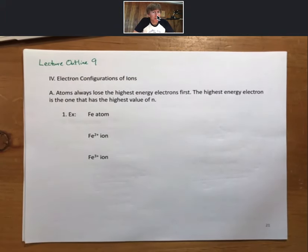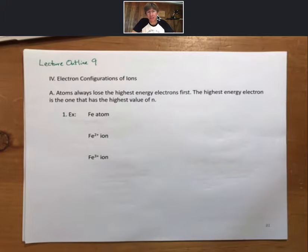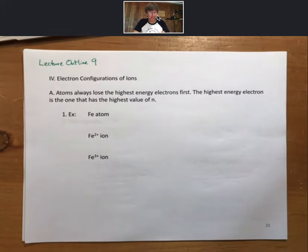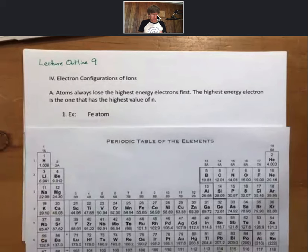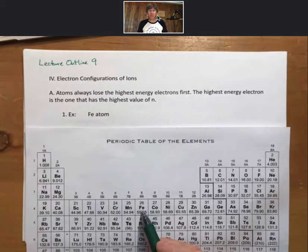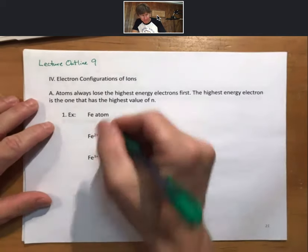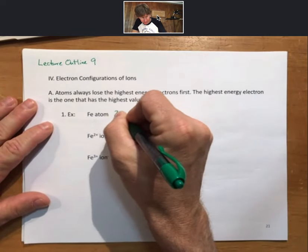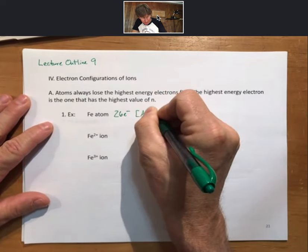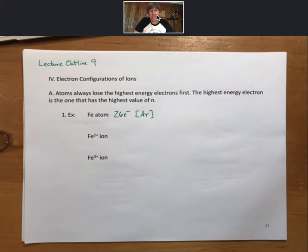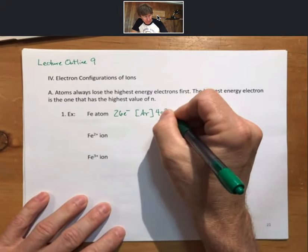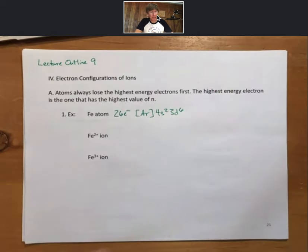We're back to talking about the electron configurations of ions. Remember, atoms always lose the highest energy electrons first. These are always with the highest value of n. If we look at the electron configurations of iron atoms and ions, and we refer to our periodic table, iron is right here, 26 electrons. Same first 18 electrons as argon, 4s2, 3d6.